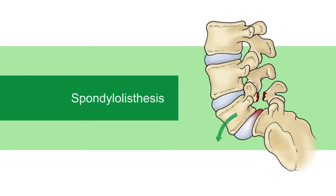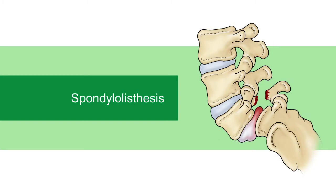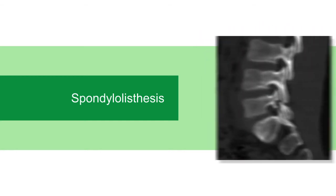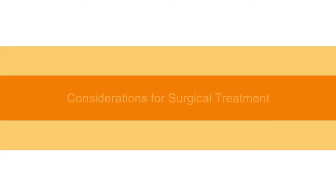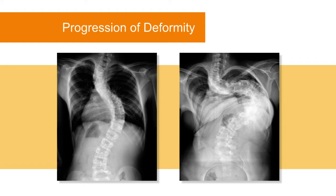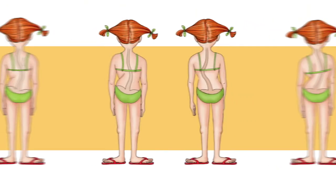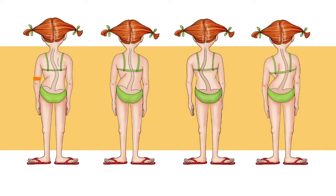Spondylolisthesis is the abnormal forward slippage of a vertebra on the one below it. Abnormal conditions that contribute to its development include congenital absence of the facet, misshapen facet joints, and fracture of the bone between the facets, which is called the pars interarticularis. The recommendation to consider surgical treatment may be based on progression of the curve over time as seen on x-ray, worsening of the imbalance, loss of waist symmetry, elevation of the shoulder, or increasing truncal shift where the shoulders are no longer centered over the hips.